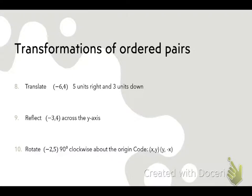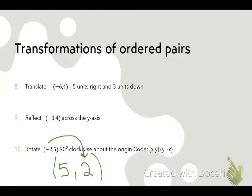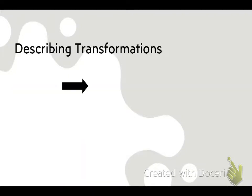Rotate negative two, five — 90 degrees clockwise about the origin. I gave you the code, and you will have the codes on the test tomorrow. Vivian got it: five and two. She flipped the order and did the opposite of X. X was negative two, now it's positive two — giving the answer five, two. Flip the order and do the opposite of X.